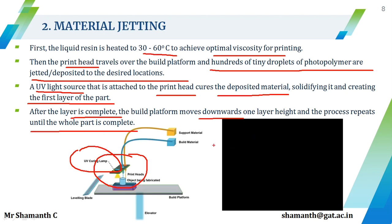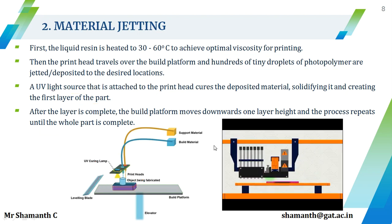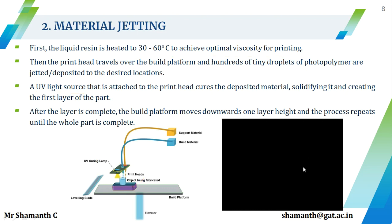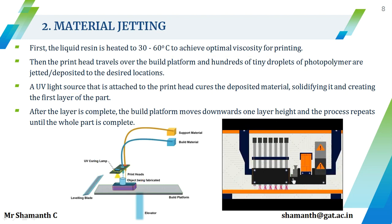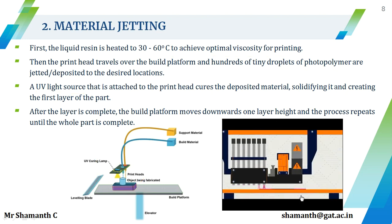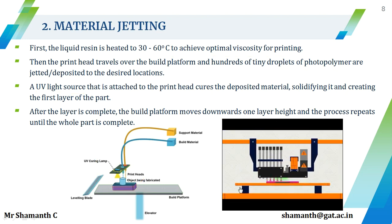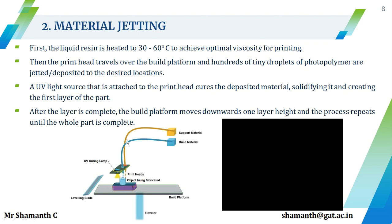You can see the video here — the material is being jetted. Once the material is jetted, UV light comes in contact with the material and solidifies the part. This is how the material jetting process takes place.